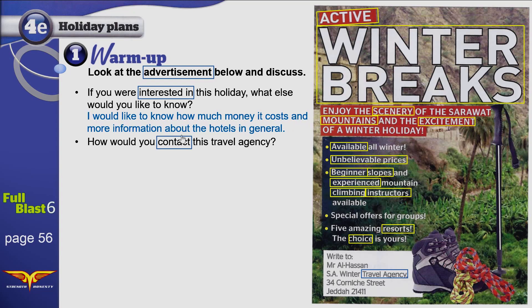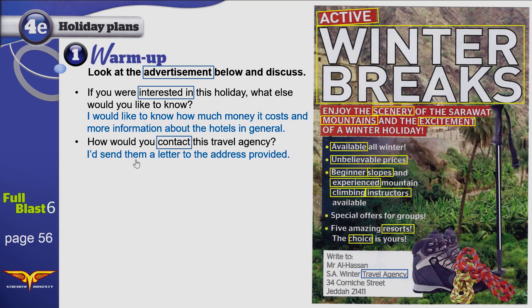And more information about the hotels in general — you say that you have five amazing resorts, okay. What facilities? Do you have Wi-Fi? Do you have king-size beds? I want to know more about the resorts. How would you contact — how would you get in touch with this travel agency? How can you call them? Well, there is an address here. Use this address to write a letter to this man, Mr. Al-Hassan. I'd send them a letter to the address provided.